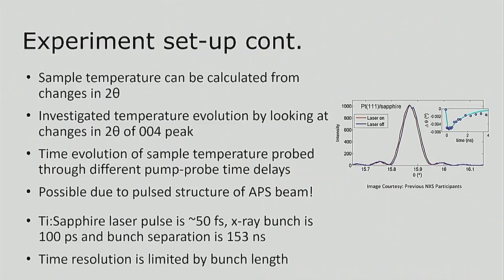And this image is stolen from some previous NXS school participants because we forgot to retrieve our data. And you can see there's two images here that are very close to each other, but you can see there's a slight shift in the Bragg peak. And that's because the sample temperature has changed and the d-spacing has correspondingly changed. So what we want to do is measure the time part of this. So how we do that is by changing the delay between the pump and the probe. So sometimes you have the laser pump and then you probe straight afterwards, and sometimes you have a slight delay.